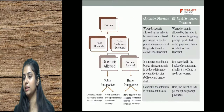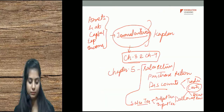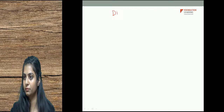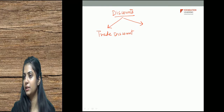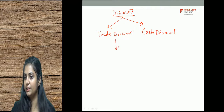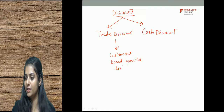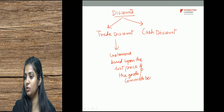Let's start with discounts. Discounts are of two types. First is called trade discount and second one is called cash discount. Trade discount is given to the customers based upon the list price of the goods or commodities. One thing you need to remember is that it is given on the list price. List price of the goods is a very important term here.